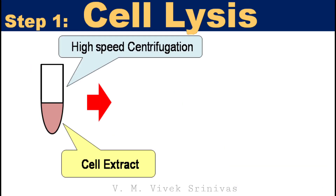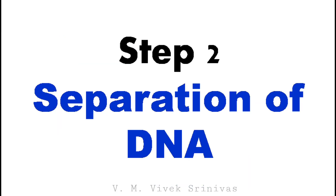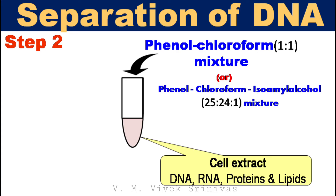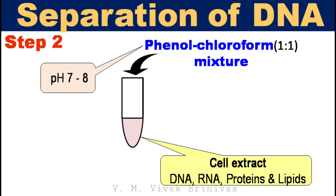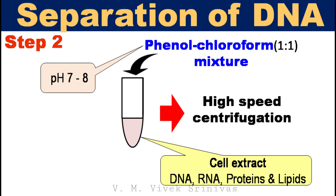Following cell lysis, separate the cellular contents — that is, the cell extract — by centrifugation to remove cell debris. Step 2: Extraction or separation of DNA. To the cell extract, add 1 ml of phenol-chloroform mixture whose pH is 7 to 8. Mix well by inverting and incubate at room temperature for 5 minutes. Phenol and chloroform are used to denature and separate proteins from DNA. Following incubation, centrifuge the mixture at high speed — 10,000 RPM for 10 minutes at 4 degrees Celsius.